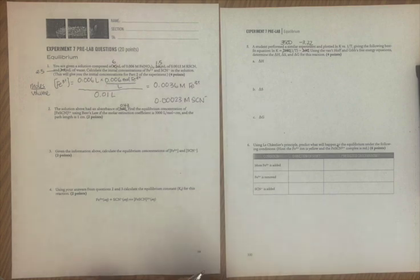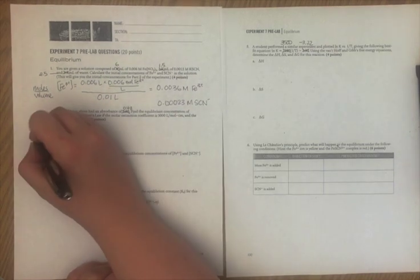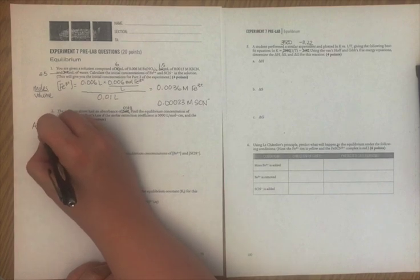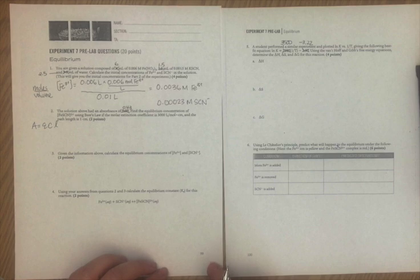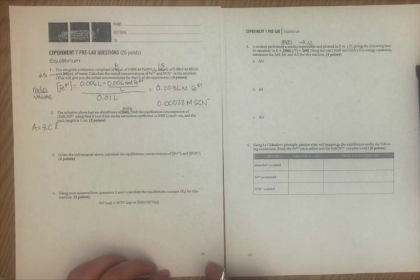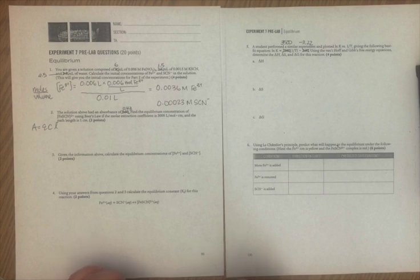The next question asks us to use Beer's Law. So we need to remember what Beer's Law is. The absorbance equals epsilon C l. Epsilon is the molar extinction coefficient, which is given to us in this case. C is the concentration in molarity.